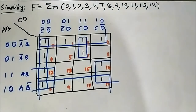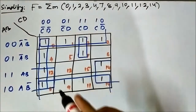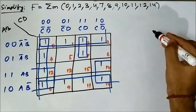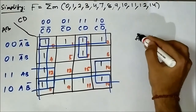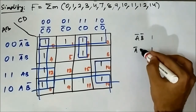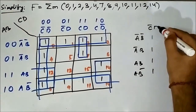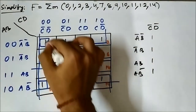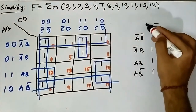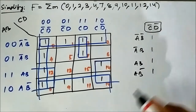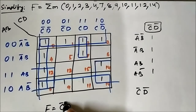Now we have to find the common variables. Let us take this first quad. This quad has 4 cells, with horizontal components Ā, B, AB, AB̄, and vertical components C̄D̄. Here in the horizontal side there is nothing common — only the vertical component is common in all the cells. So this quad has C̄D̄ as the common set of variables, which will be part of the simplified boolean expression.